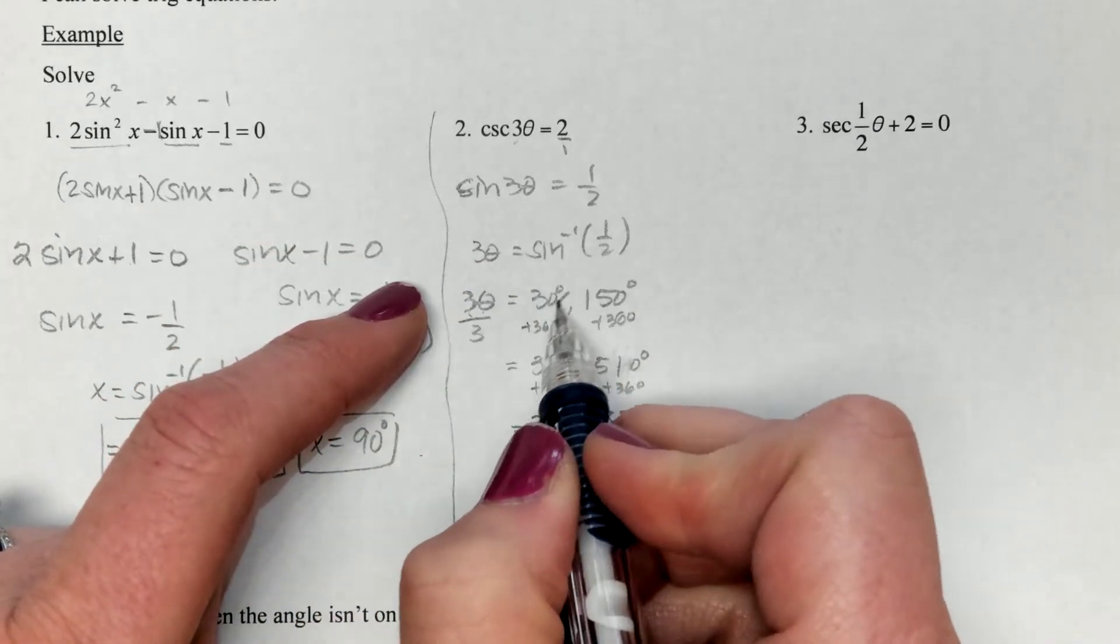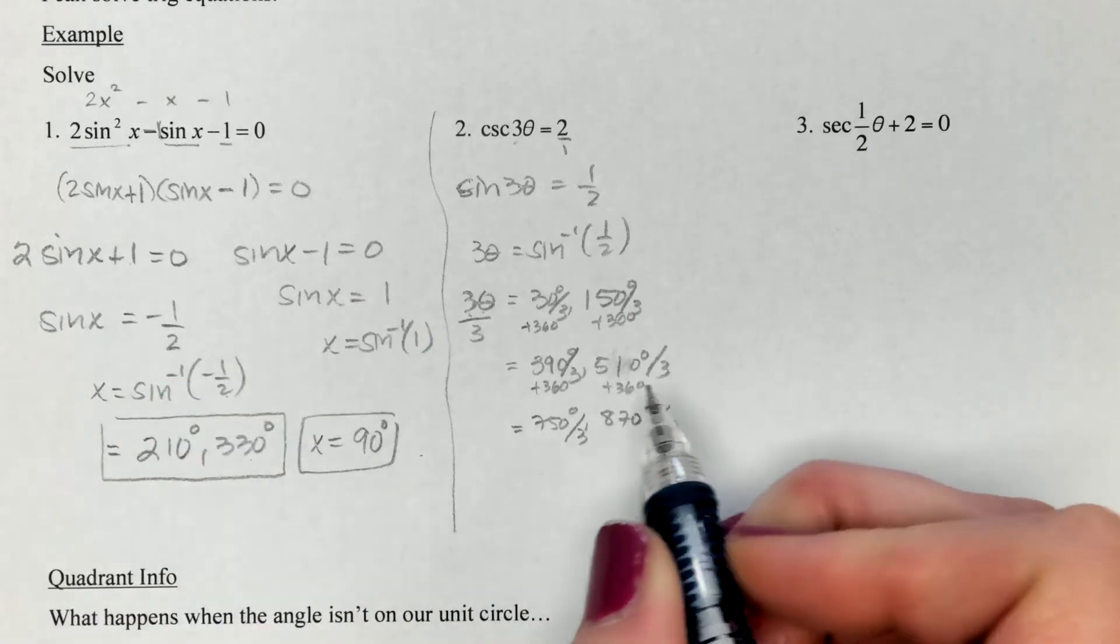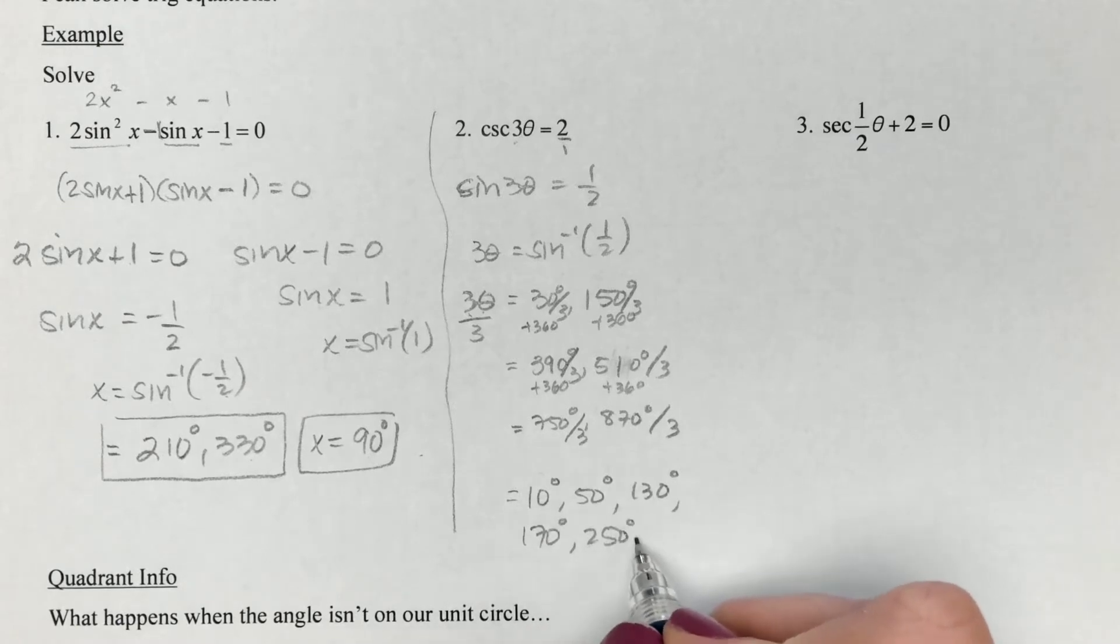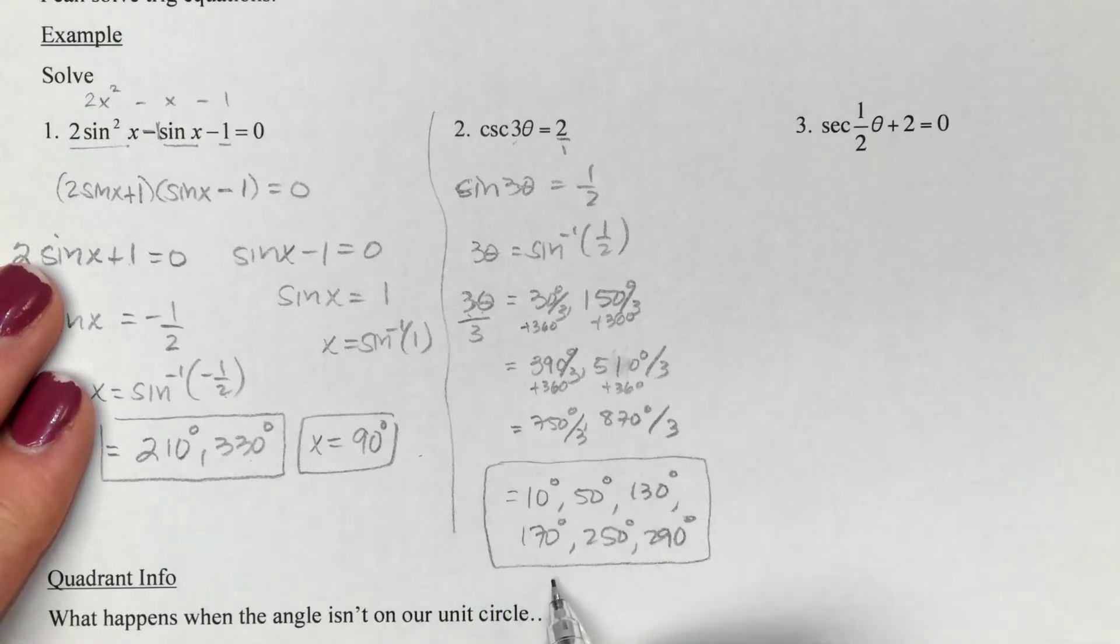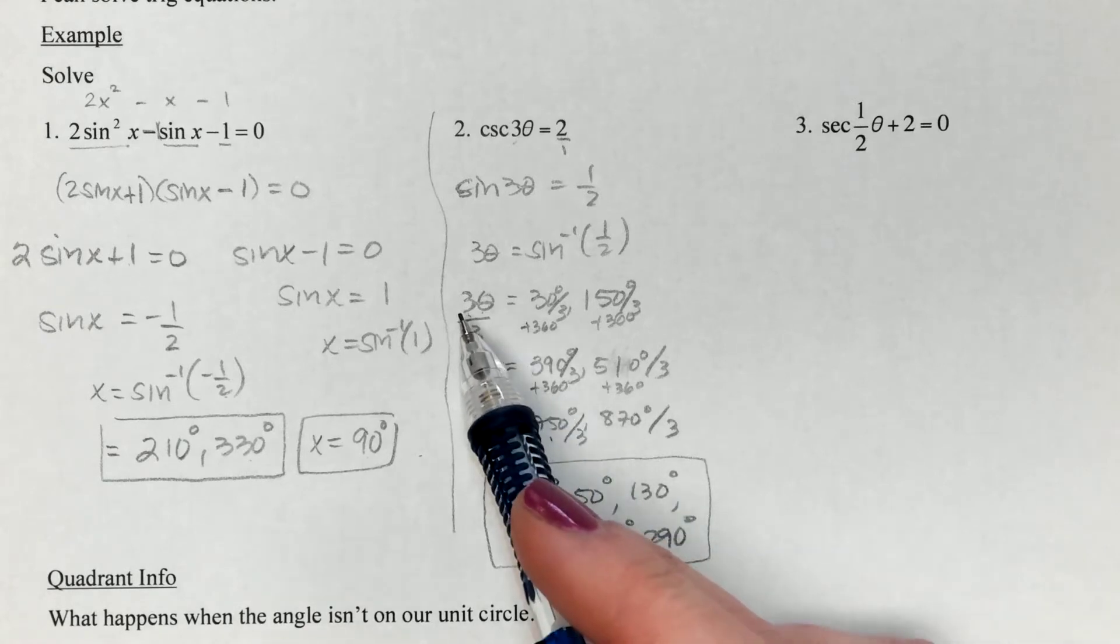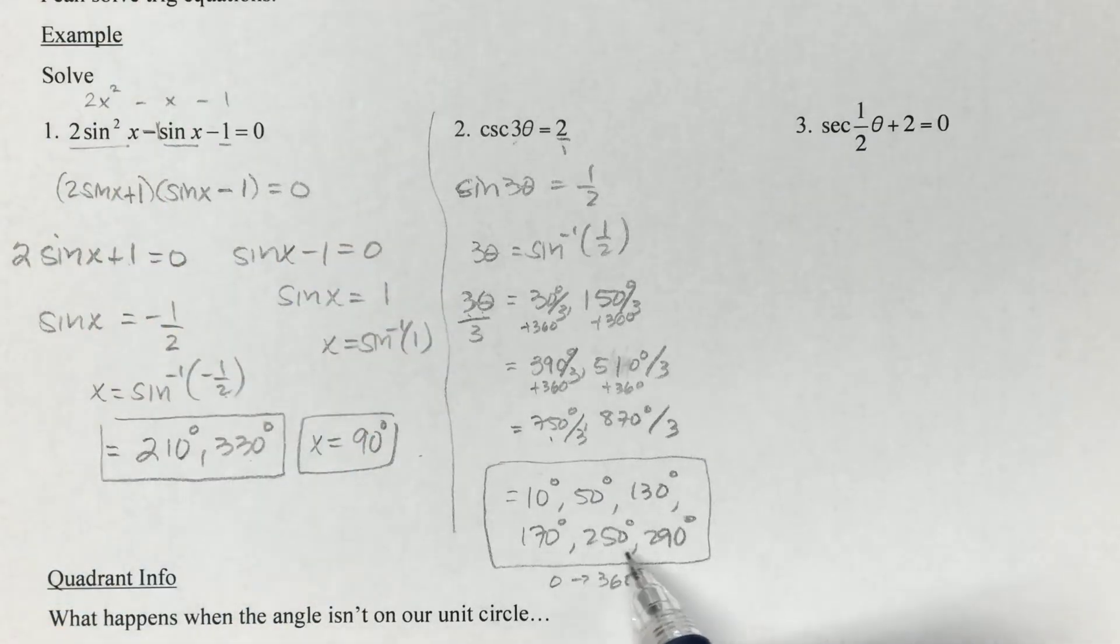Now that we have all six answers, now we're going to divide by three. When I do that, I end up with 10 degrees, 50, 130, 170, 250, and 290. All of these are inside one time around the circle. They are all from zero to 360. So even though we went around the circle three times and we had these really huge numbers, when we end up dividing by three, we actually shrink down. We actually cut our angles in thirds to a place where they're still within one rotation of the circle.